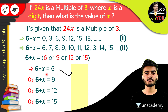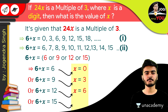So we got four conditions. First: 6 plus x equals 6, so x equals 0. Second: 6 plus x equals 9, so x equals 3. Third: 6 plus x equals 12, so x equals 6. And the last condition: 6 plus x equals 15, so x equals 9.